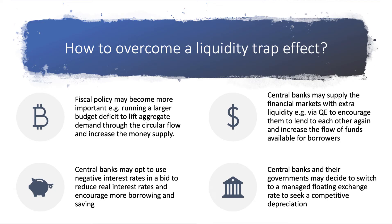The third point, if you're familiar with monetary policy in the last 10 to 15 years, is that in a liquidity trap, if low interest rates aren't working, central banks may supply the banking system with extra money and extra liquidity — particularly via quantitative easing, or QE — designed to increase the liquidity of the banking system and encourage banks to lend to each other and increase the flow of funds available.